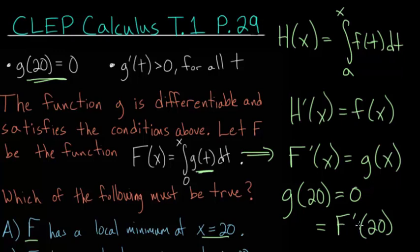The derivative is just a measure of the slope of the tangent line at that particular point. So since the slope of the tangent line is 0, that tells us we have a horizontal tangent line. We essentially have either a maximum or a minimum for this function F at x equals 20.